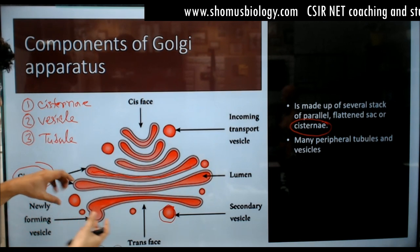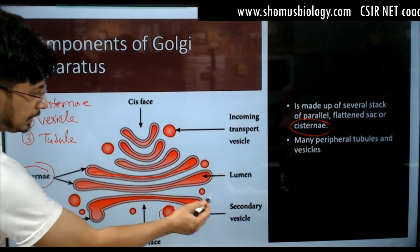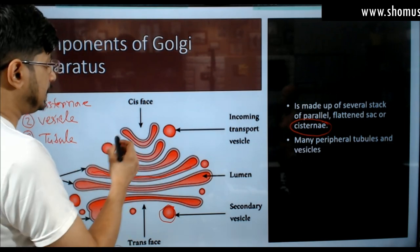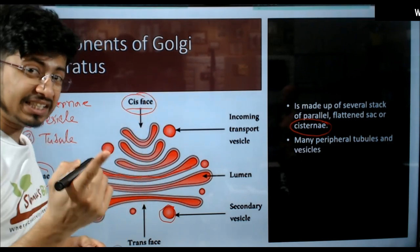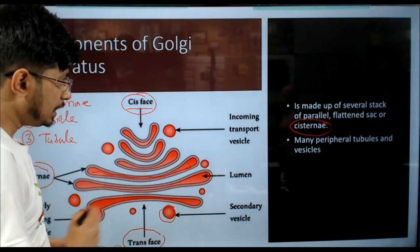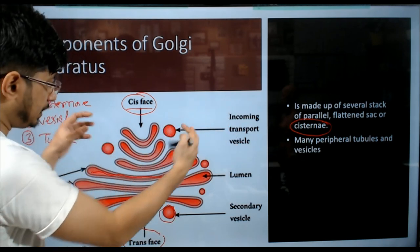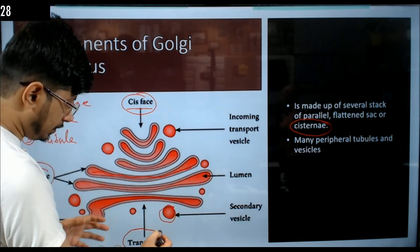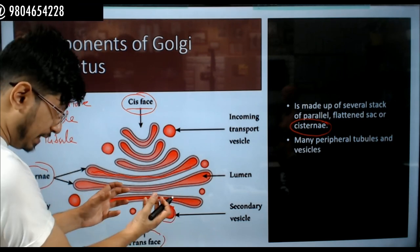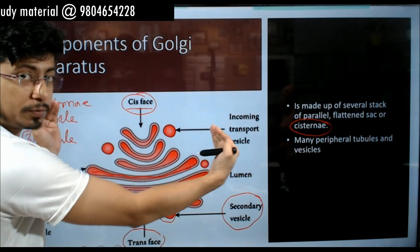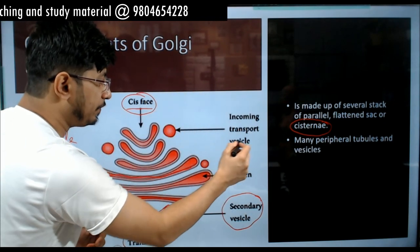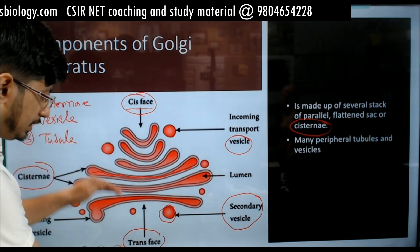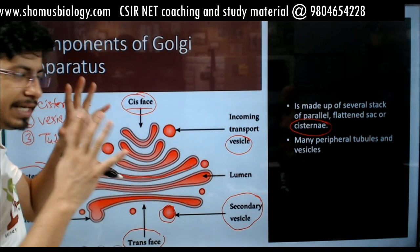The journey of vesicles begins from the cis face and ends in the trans face. The cis face has incoming transport vesicles which join together to form the next cisternae, and the cisternae get matured into the later stage of the trans face. Vesicles bulging out of the trans face are known as secondary vesicles, while incoming vesicles are known as primary vesicles.